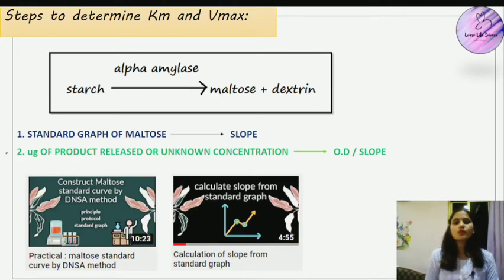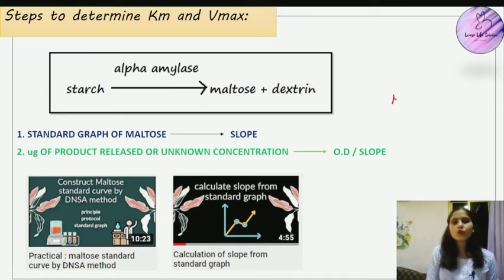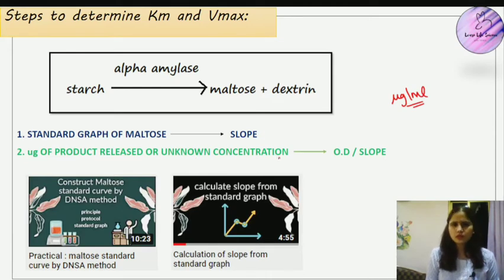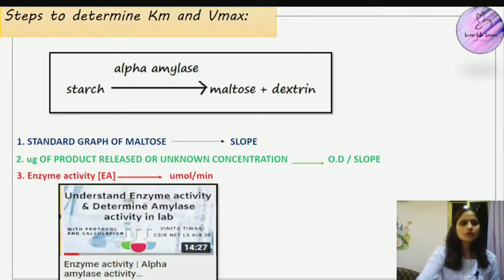The second requirement is the unknown concentration — the microgram of product released. We calculate it as: micrograms of maltose = OD (absorbance of test sample) / slope. We will simply divide the absorbance of each test tube by the slope (0.00096) to get the microgram of product released per ml.